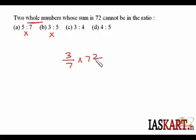That means 3 by 7 of 72. Now we will not be getting an integral value here. That means 72 cannot be distributed in the ratio 3 is to 4. I hope you are clear.